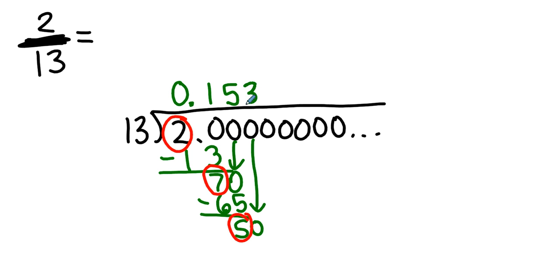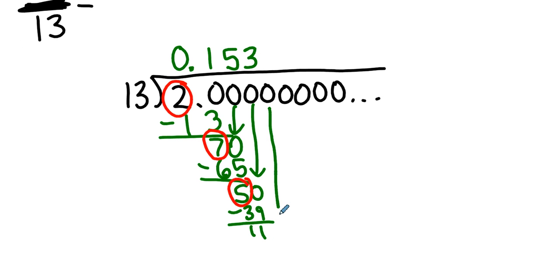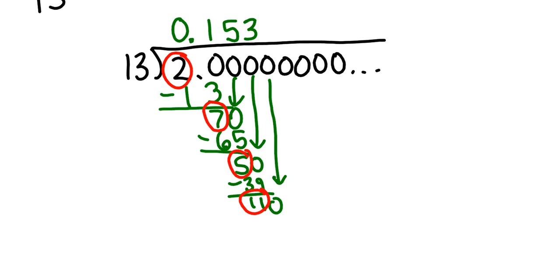Thirteen goes in a 50 three times. We do the multiply, subtract thing. Bring down a number. Now we've got that remainder. Okay, no problem. Thirteen goes into 110 eight times.